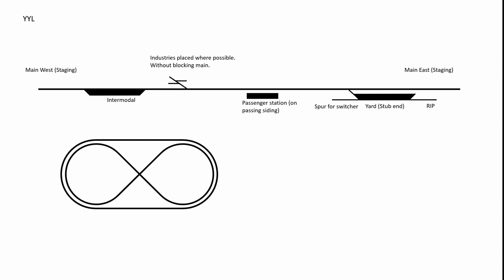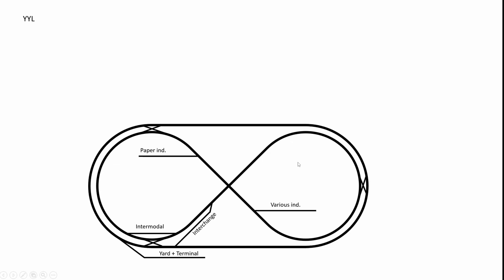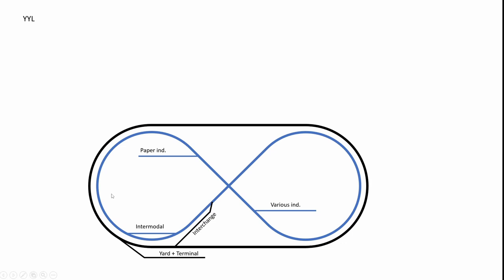Now let's go to operations. There are one, two, three crossovers where you can go from the inner track to the outer track, plus the interchange track. I made this extra section to help everyone get their head around what it means to have this double loop where the inside loop is folded upon itself. So we have the two loops, a yard terminal, intermodal, interchange, paper industry, and oil industry.